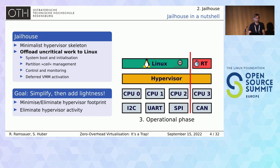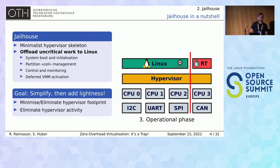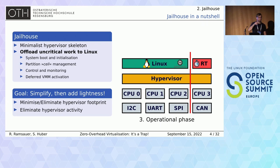Q: How do you get Jailhouse into EL2 on ARM? A: We are piggybacking on the KVM stubs. That is possible with a normal kernel. You have to know the location of the hypervisor stubs, take them over, replace them with our code, and hook in underneath Linux.